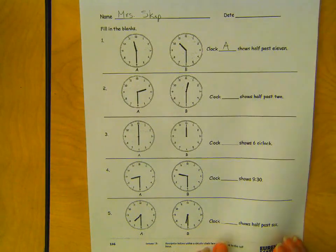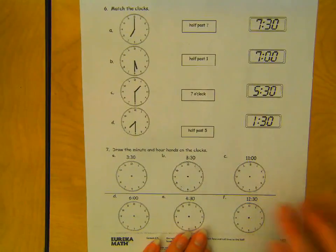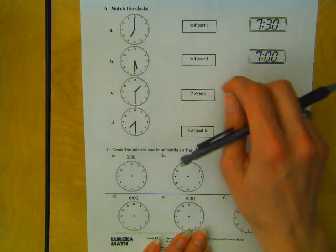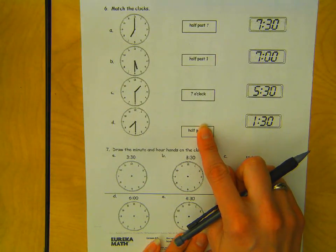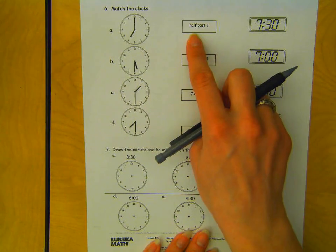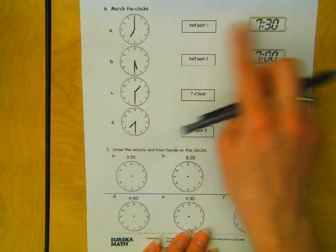I'm going to flip it over to the other side. Match the clocks. So right here in the middle, we have the time in word form, and it's going to match to an analog clock and a digital clock.